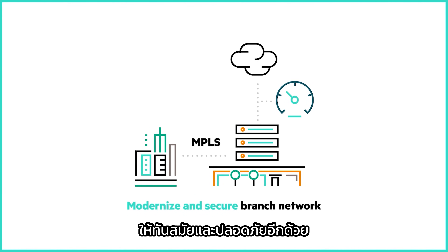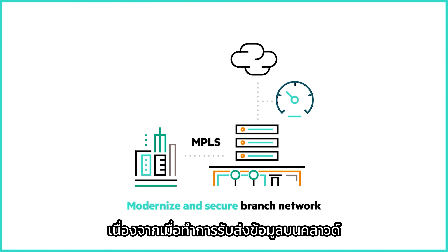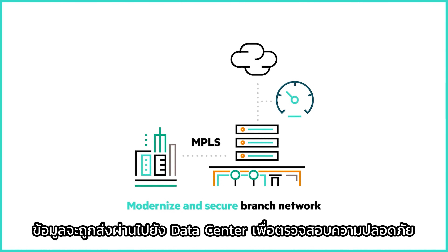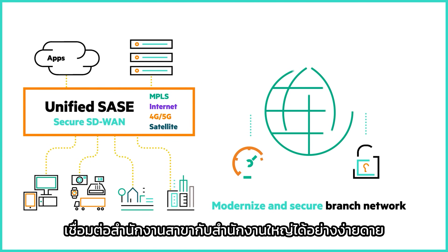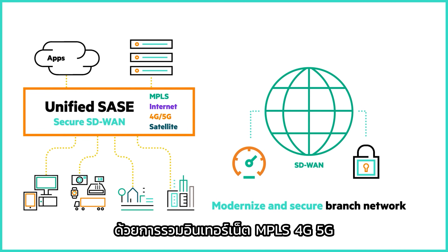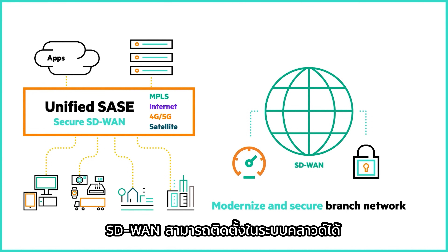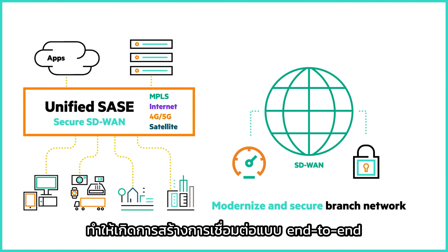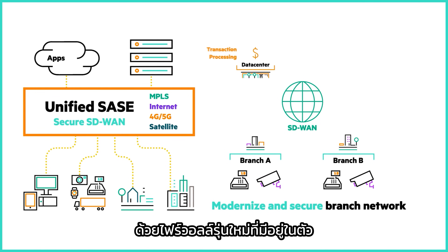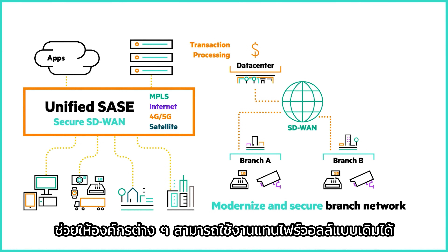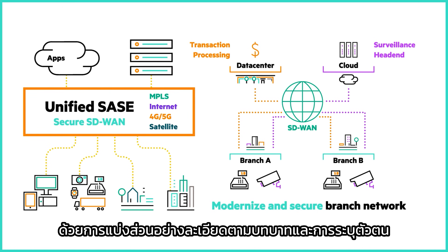SASE also helps modernize and secure network in-branch offices. Traditional MPLS architectures introduce latency and performance limitations when backhauling cloud traffic to the data center for security inspection. SASE eliminates this need and continuously monitors digital experience. SD-WAN enables organizations to easily connect branch offices to headquarters by combining MPLS, internet, 4G, 5G, and satellite links while intelligently steering traffic to the cloud. SD-WAN can even be deployed in cloud service providers, creating an end-to-end connection and enabling multi-cloud networking. Secure SD-WAN safeguards branch offices with a built-in next-generation firewall, enabling organizations to replace legacy firewalls. It also isolates IoT traffic from critical apps with fine-grained segmentation based on roles and identity.